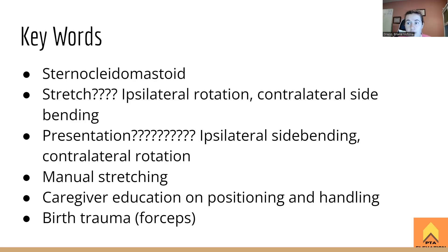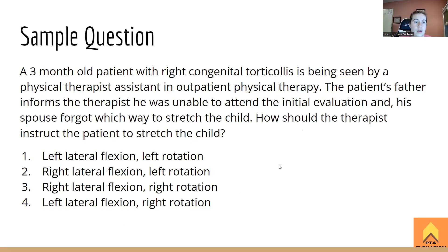Sample question: A three-month-old patient with right congenital torticollis is being seen by a PTA in outpatient physical therapy. The patient's father was unable to attend the initial evaluation and his spouse forgot which way to stretch the child. How should the therapist instruct the parent to stretch the child? Options: 1) Left lateral flexion, left rotation. 2) Right lateral flexion, left rotation. 3) Right lateral flexion, right rotation. 4) Left lateral flexion, right rotation.